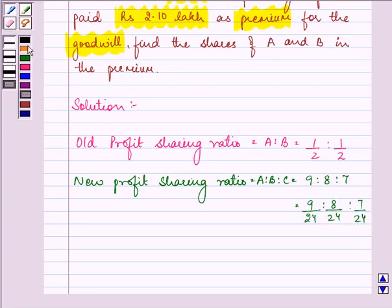So first of all, we will be finding out the sacrificing ratio. Sacrificing ratio is calculated by subtracting new ratio from the old ratio.